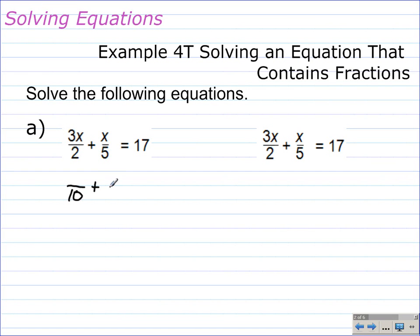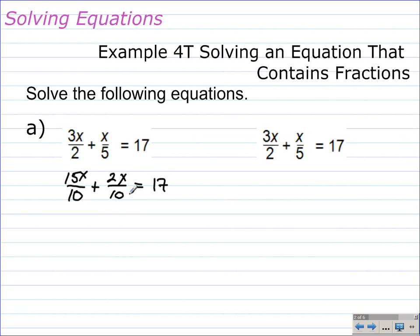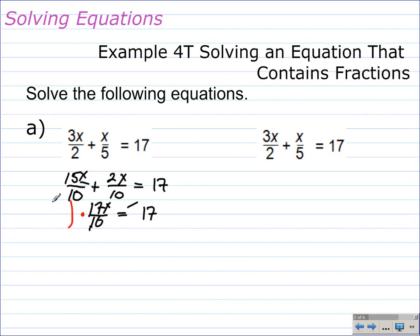So our denominators will be 10 in this case. Since I multiply 2 by 5 to get 10, 3x times 5 gives 15x. And since I multiply 5 by 2 to get 10, I multiply 1x by 2 to get 2x. At this point, I'll bring down my equal 17. On the left-hand side, since I have the common denominator of 10, I can add the two numerators: 15x plus 2x is 17x, being equal to 17.